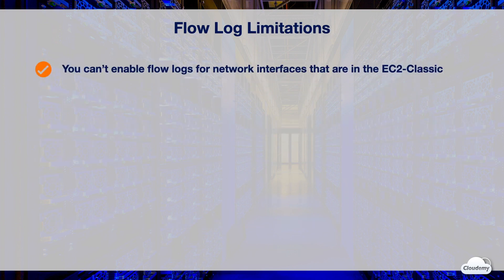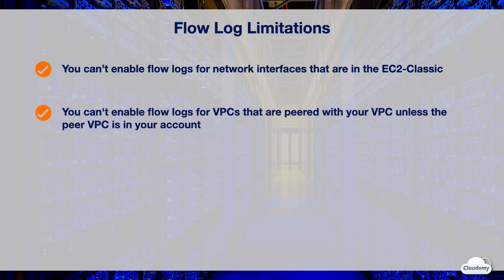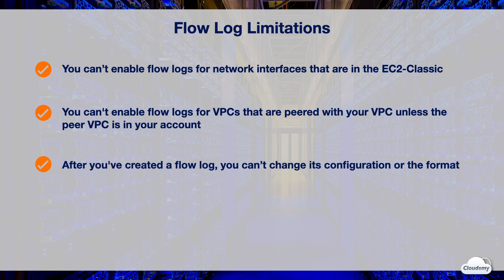You cannot enable flow logs for network interfaces that are in the EC2-Classic platform, including EC2-Classic instances that have been linked to a VPC through ClassicLink. You cannot enable flow logs for VPCs that are peered with your VPC, unless the peer VPC is in your account. After you've created a flow log, you cannot change its configuration or the flow log record format — for example, you cannot associate a different IAM role with the flow log or add or remove fields. Instead, you can delete the flow log and create a new one with the required configuration.